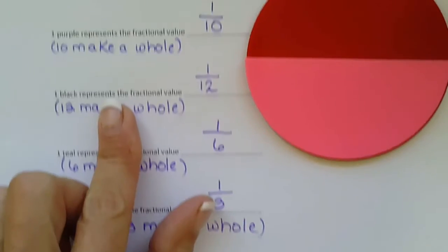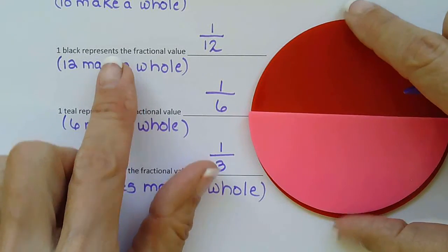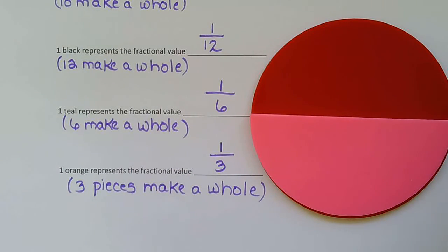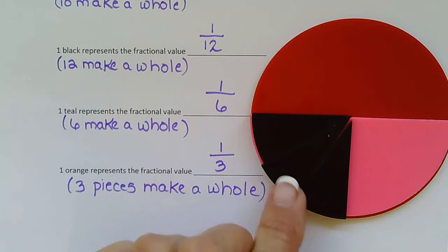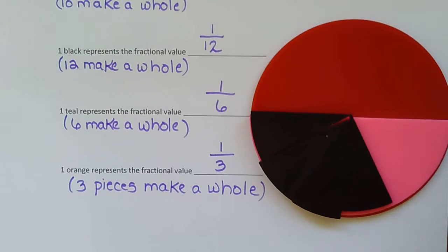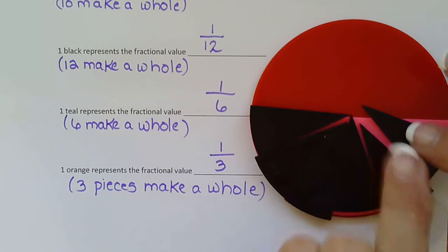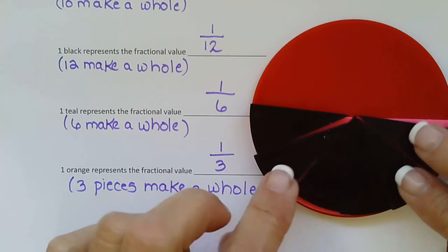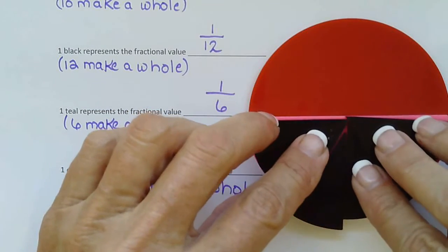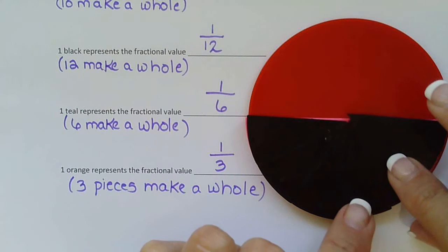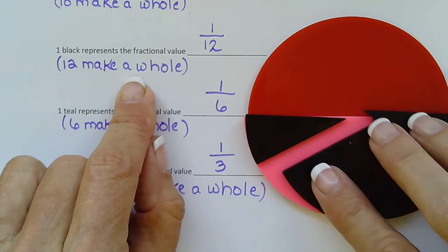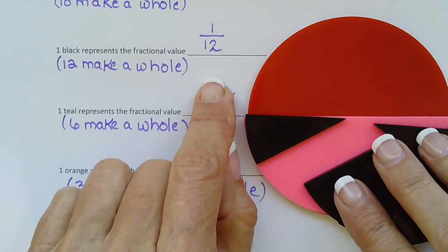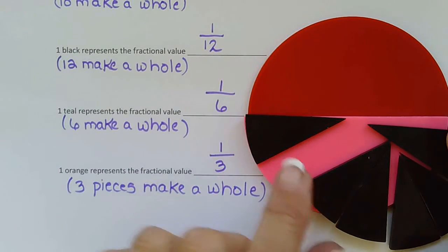Next we're going to look at black. So if we put all these blacks in, one, two, three, four, five, six. So we can see six blacks make half of the circle. So that means twelve will make the whole circle, right? So twelve make a whole because six make half. So if twelve make a whole, that means one piece is going to be one twelfth of the whole circle. Because twelve make a whole, one piece would be one twelfth.